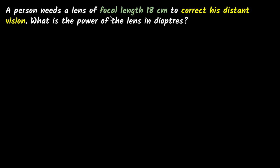A person needs a lens of focal length 18 centimeters to correct his distant vision. What is the power of the lens in diopters? The first thing I see is the focal length is given to me, so I just have to calculate the power.